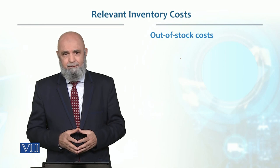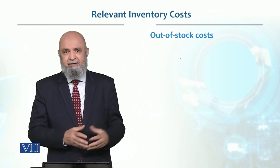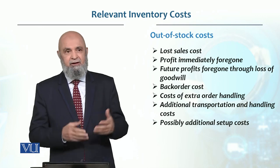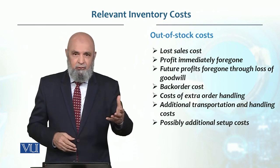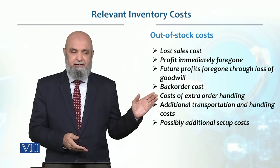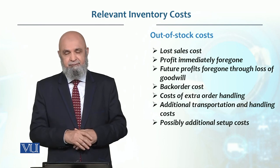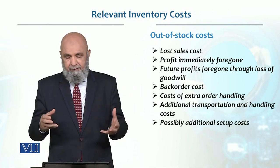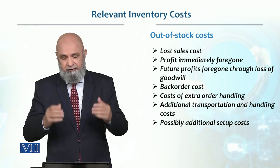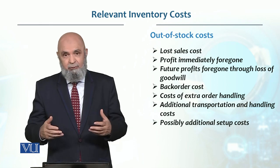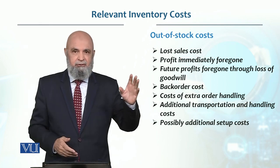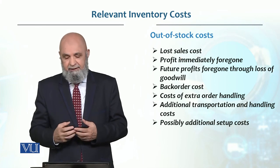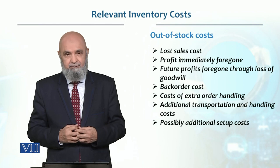Then there is out-of-stock cost. If you don't have material and a customer comes and you are out of stock, first you have lost a sale. For example, in a retail shop a customer came needing a product, you don't have it, they went to another shop and bought it there. You lost that sale, so the contribution margin on it is lost, and profit immediately foregone. Then loss of goodwill — the customer may say they won't go to that shop again because the product is never available. That goodwill cost is difficult to estimate, but future sales can be lost.